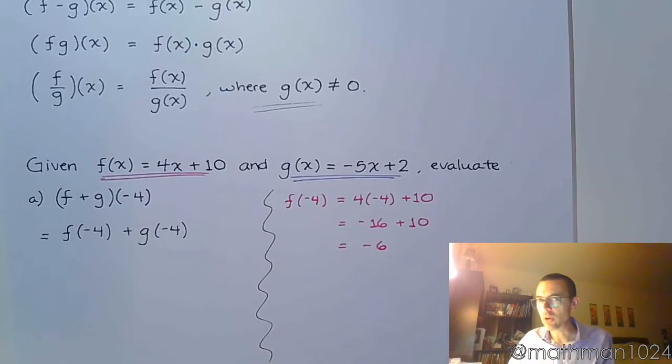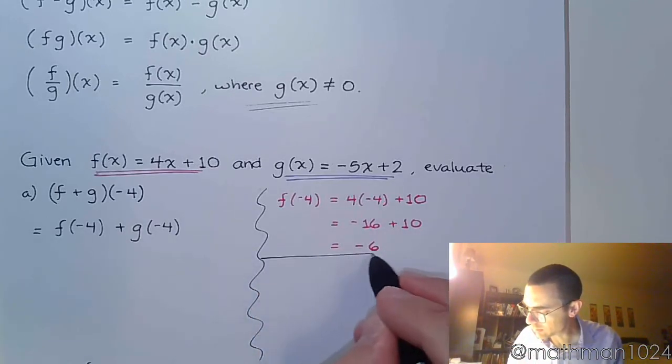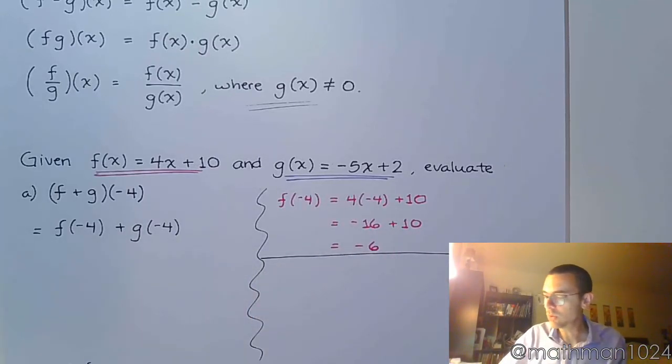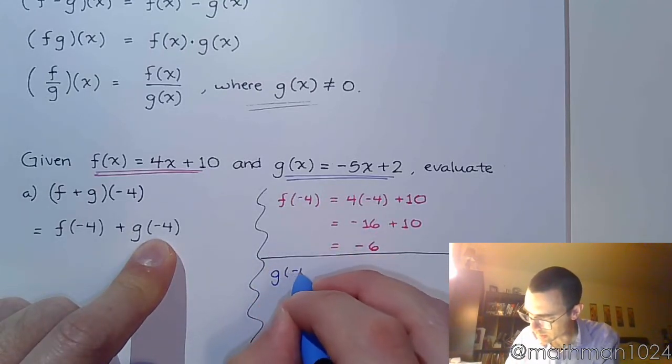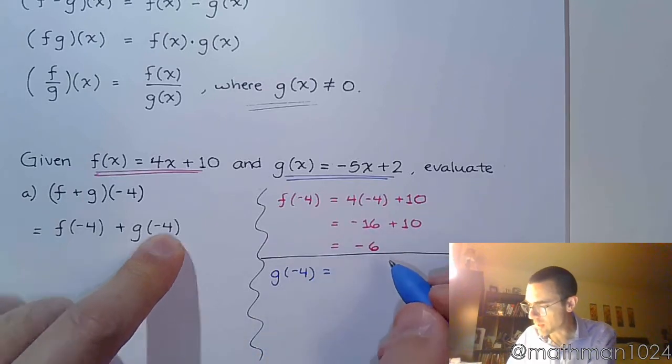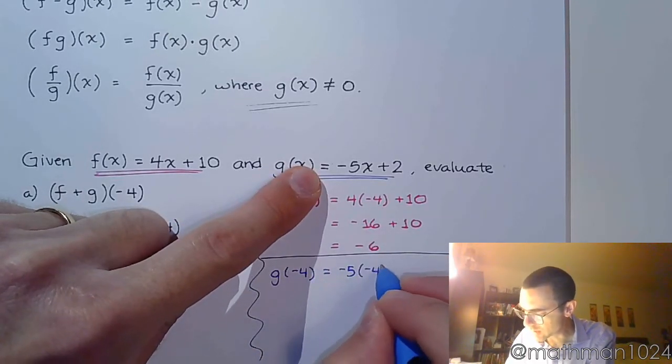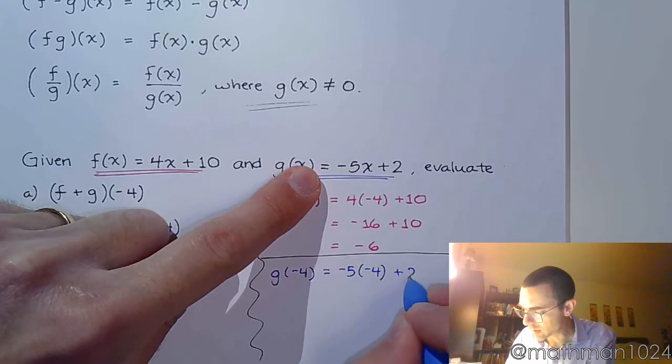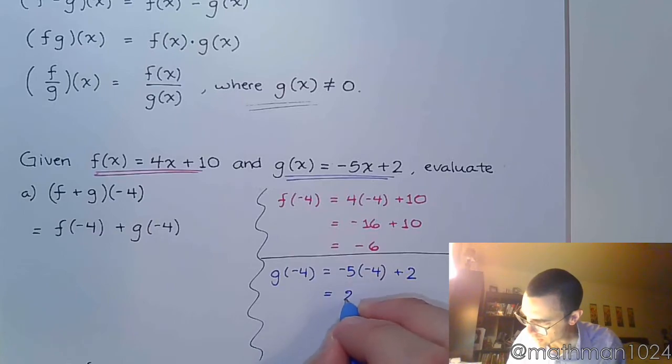That is really all that I'm trying to do there for that first part. And then we go to g. Find g(-4). So that means -5 times x, which in this case is -4, plus 2. Working this out, I get 20 + 2, and I get 22.